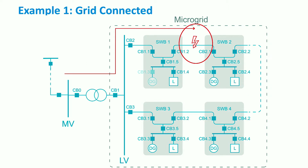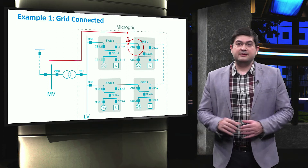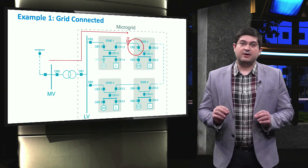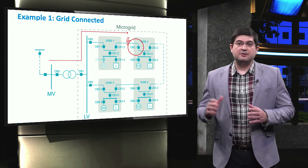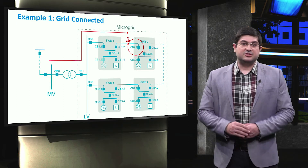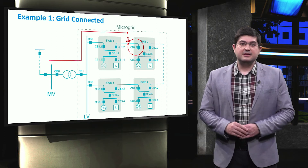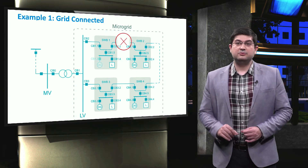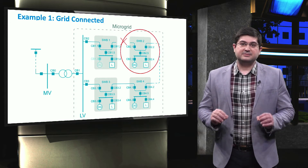If a fault occurs between switchboard 1 and switchboard 2, then the fault current is supplied from the grid. For this case, the fault current will pass through circuit breaker 1.2. Then circuit breaker 2.1 will be opened using a follow-me function of CB 1.2. This function helps disconnect both the head and the end of each line as soon as one of the two relays detects the fault. Once these two circuit breakers 1.2 and 2.1 are opened, switchboard 2 becomes disconnected from the grid.